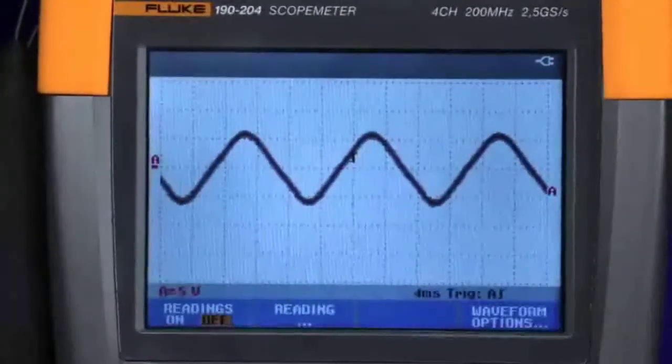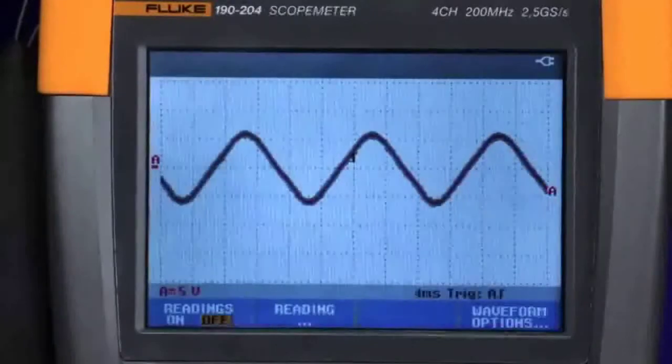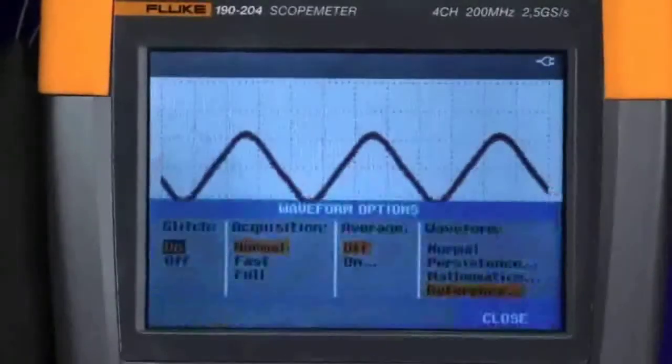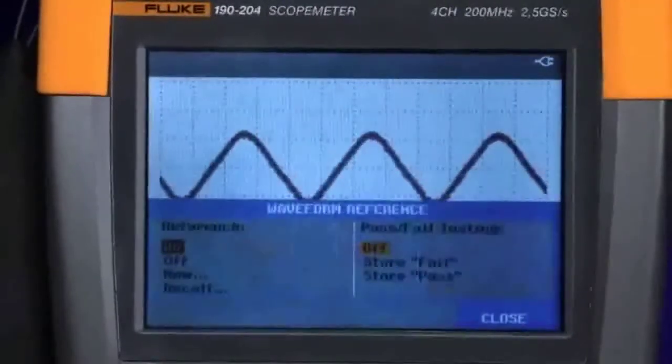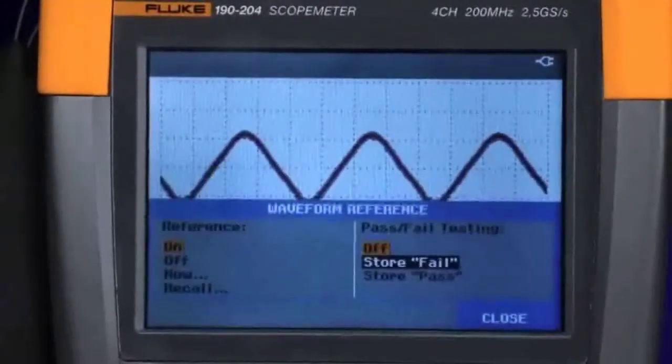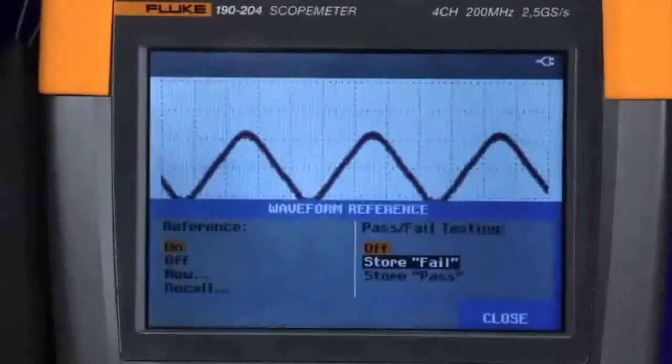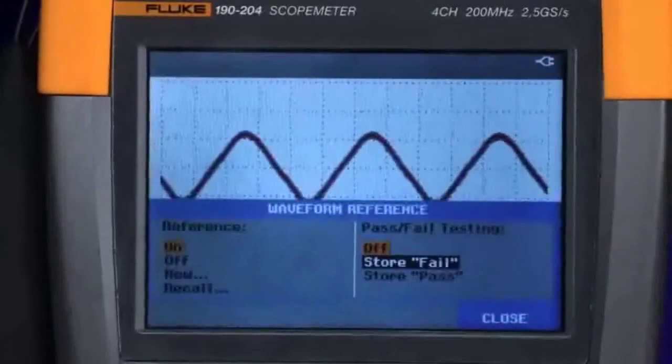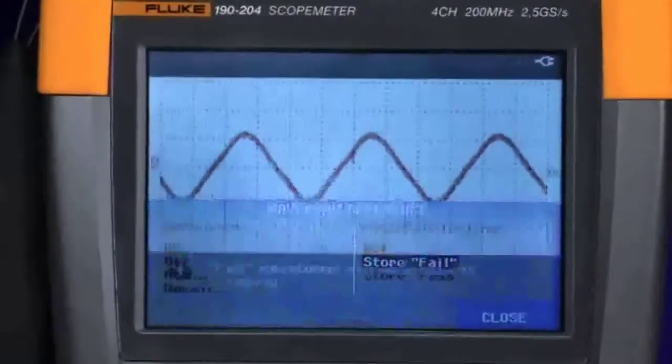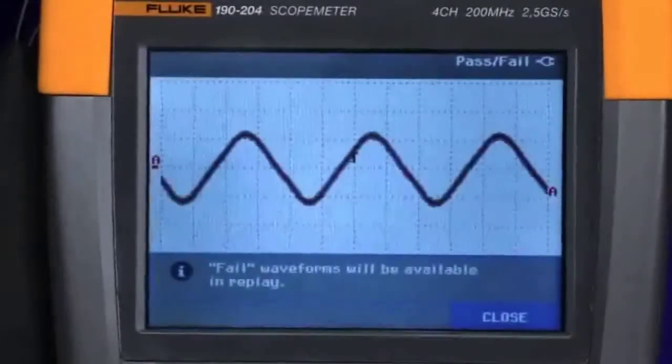Press the waveform option menu. Select reference and then choose either store on fail when the unknown trace exceeds the envelope or store on pass when it remains within the envelope. For this test, we'll choose store on fail. Now the oscilloscope will monitor the input waveform and compare it to the waveform envelope that we've just created.